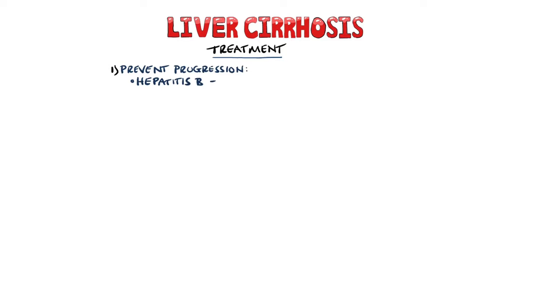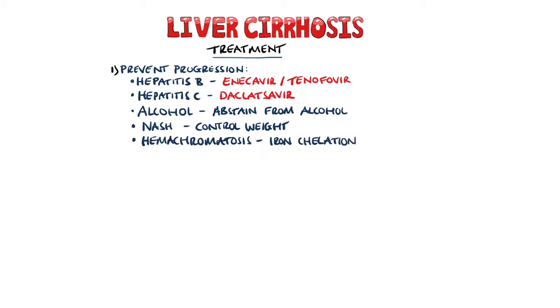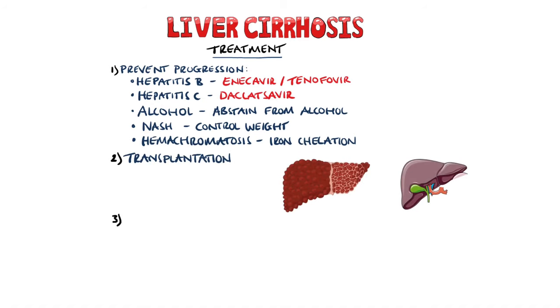Liver cirrhosis itself is irreversible, but there are some options. Some treatments aim to prevent further progression: in patients with hepatitis B, entecavir or tenofovir may be given; hepatitis C can now be treated with drugs like daclatasvir. Patients with cirrhosis due to alcohol should abstain from alcohol, while non-alcoholic steatohepatitis-related cirrhosis requires patients to control weight, and haemochromatosis needs iron chelation. Transplantation is an option for some patients, but given the strict criteria, many patients with cirrhosis will not be eligible.